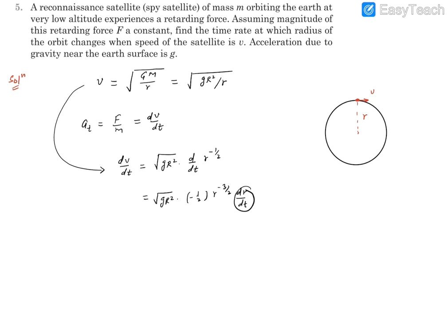This dR by dt is what we are looking for - the rate of change of radius with respect to time. Now this dV by dt is F by m, the mass of the satellite. So minus square root of gR² by 2 R raised to power minus 3 by 2 dR by dt equals F by m.